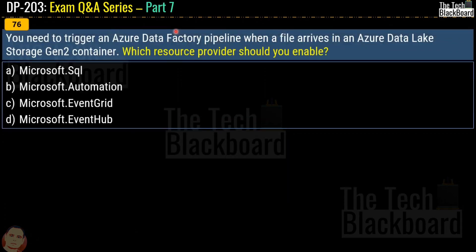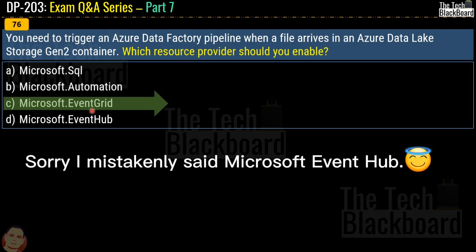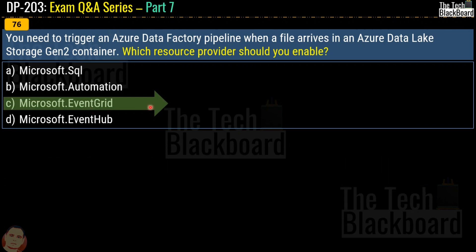Question 76: you need to trigger an Azure Data Factory pipeline when a file arrives in an Azure Data Lake Storage Gen2 container. Which resource provider should you enable? Options are Microsoft SQL, Microsoft Automation, Microsoft Event Grid, or Microsoft Event Hub. The correct answer is option C, Microsoft Event Grid. Key keywords here are 'trigger a pipeline when a file arrives', which means we are talking about storage-based triggers.